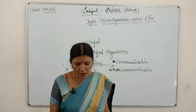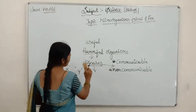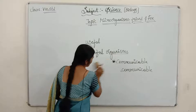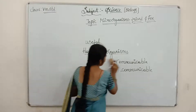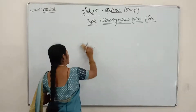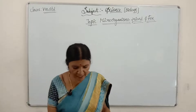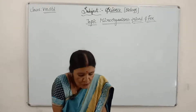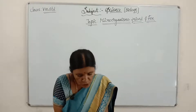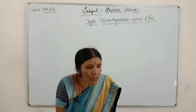Now we will see the ways how diseases are spread. We have seen that there are two types of diseases — communicable and non-communicable. Now we are going to learn about the ways diseases spread: from an infected person through air, water, food, and physical contact.